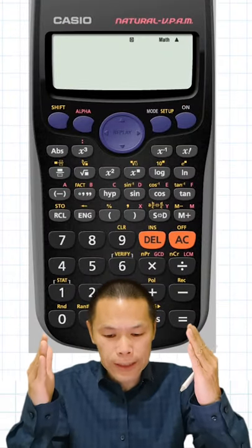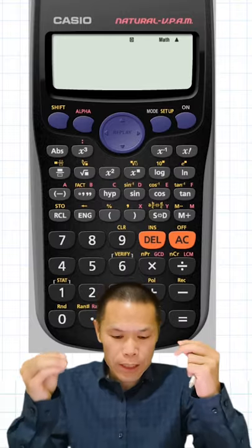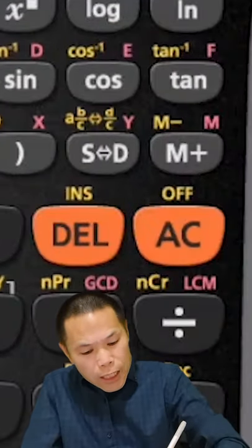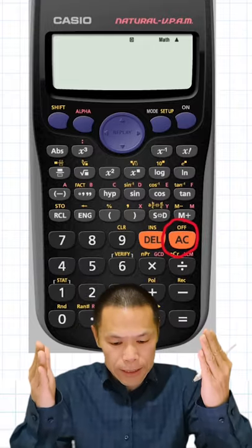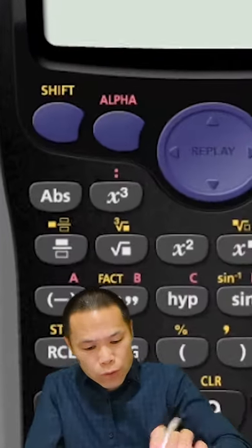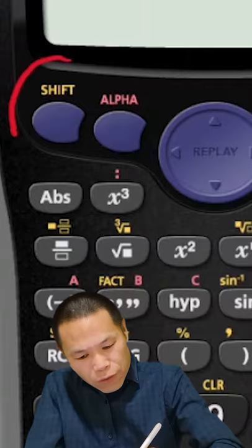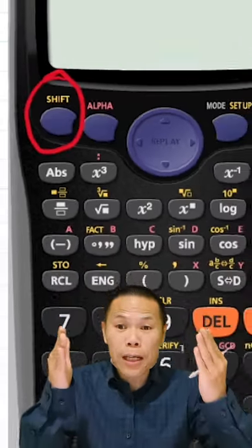However, if you have a Casio calculator, similarly what you do, under the AC button here, underneath there's an OFF button there. Now to turn it off, what you do is press the shift button, this one here first.